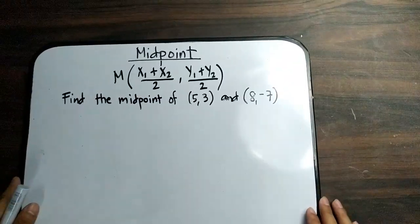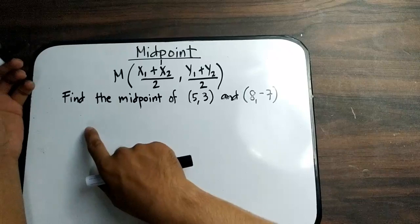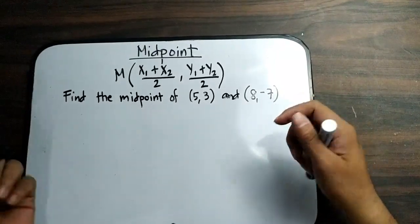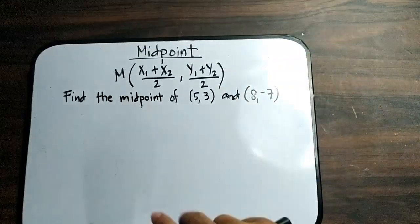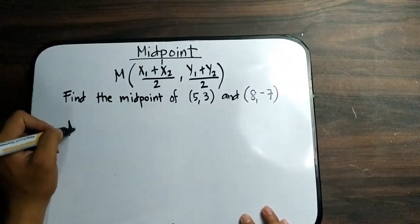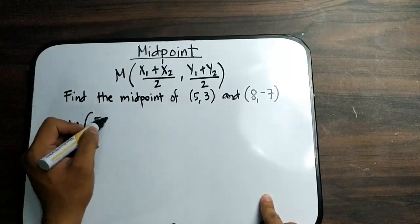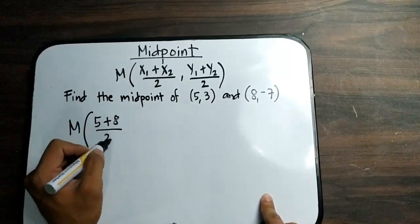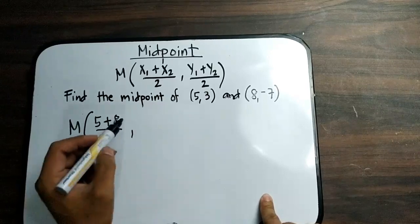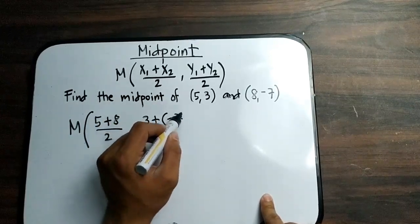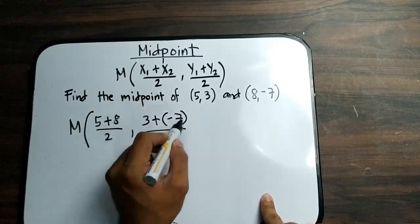Now we have here example number 2. Find the midpoint of (5,3) and (8,-7). Following this formula, it will give you this: 5 plus 8 all over 2, and 3 plus negative 7 all over 2.